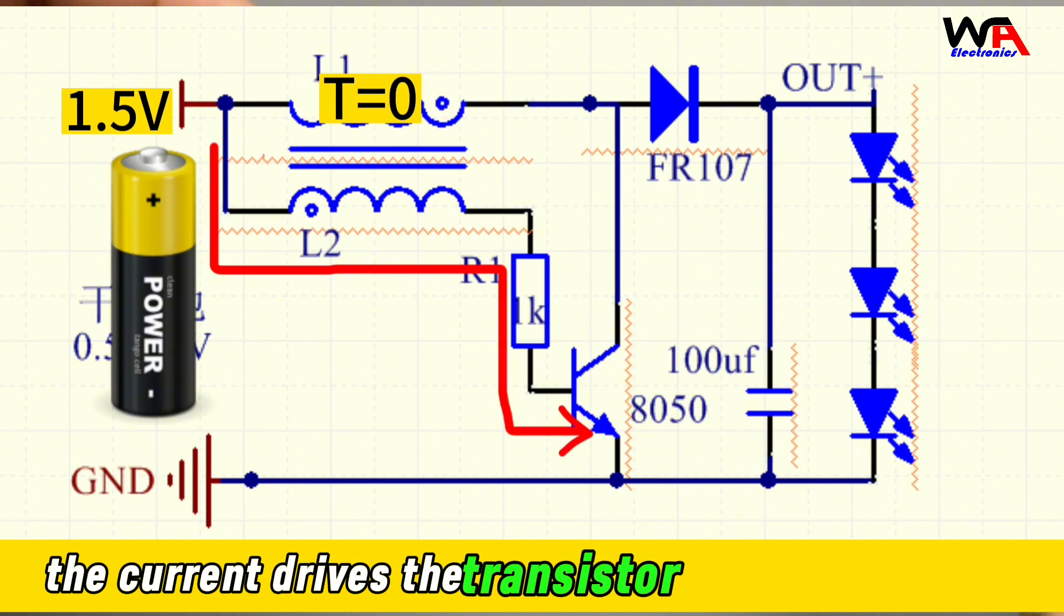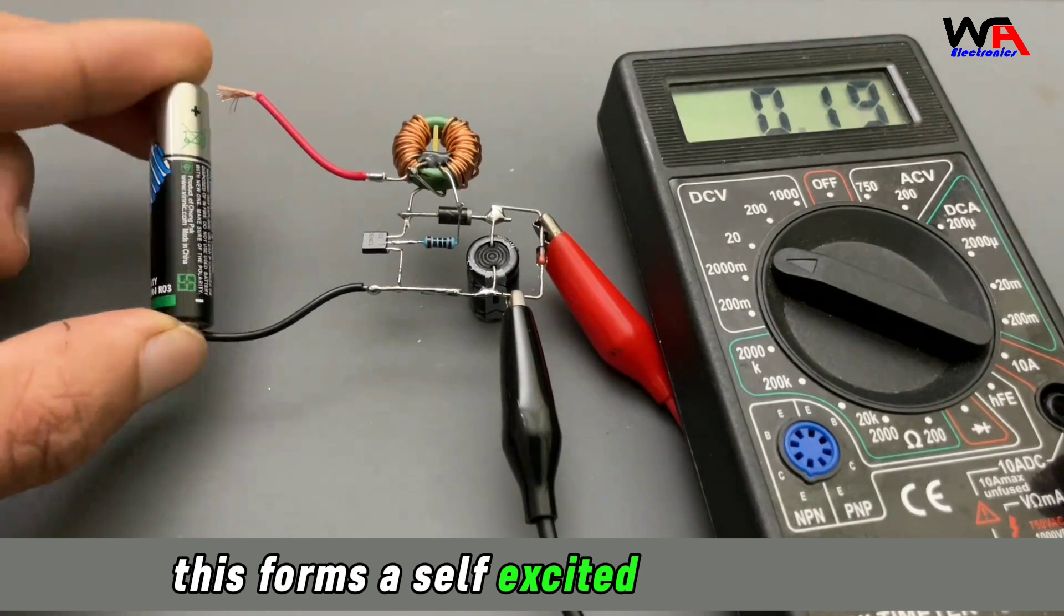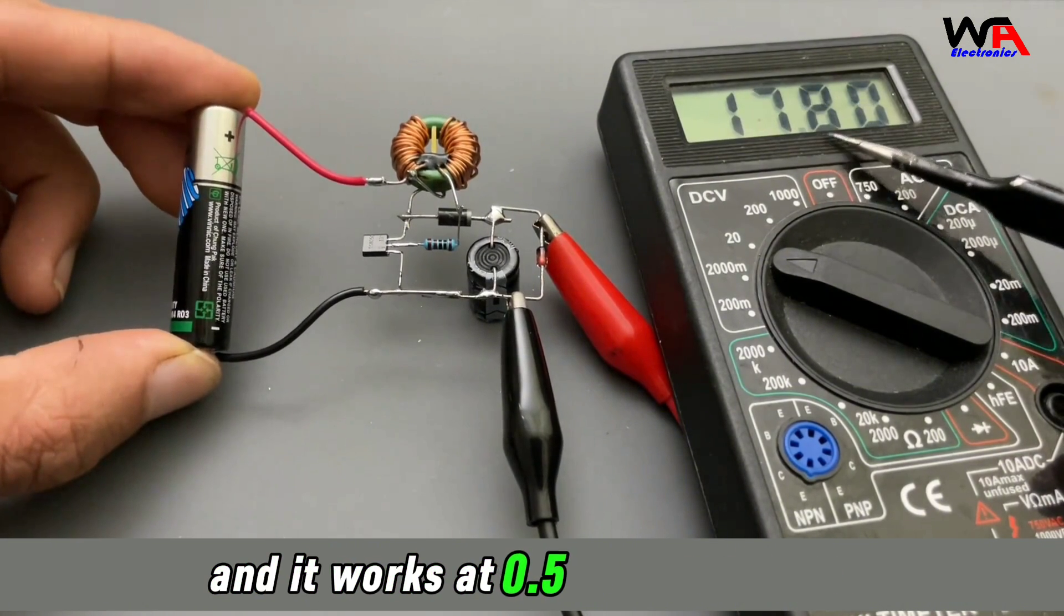The current drives the transistor through L2 and R1. This forms a self-excited boost circuit that can efficiently raise the voltage and works at 0.5 volts minimum.